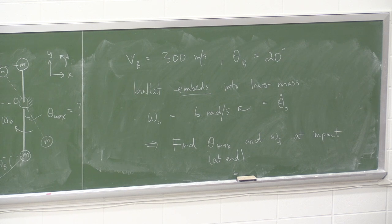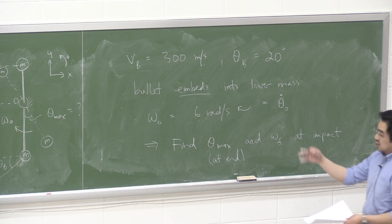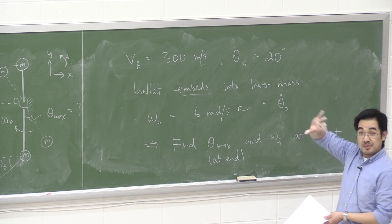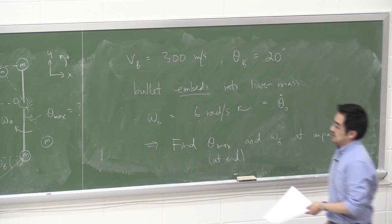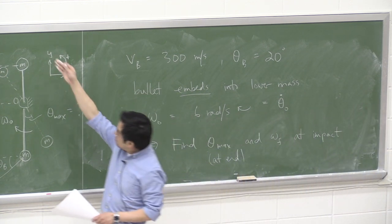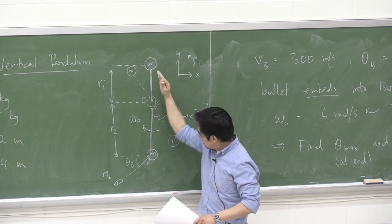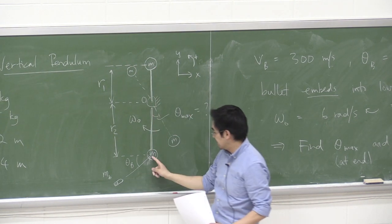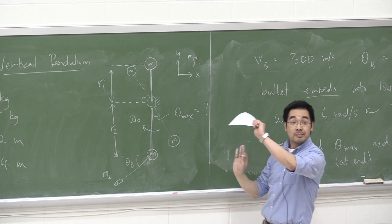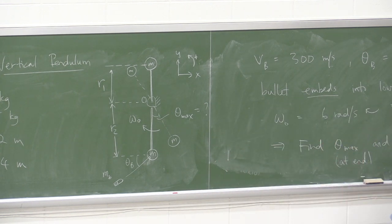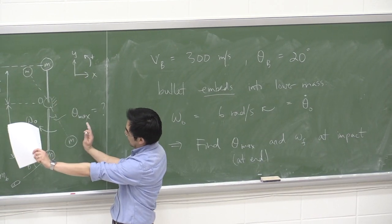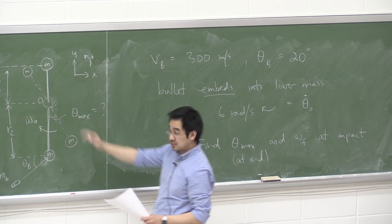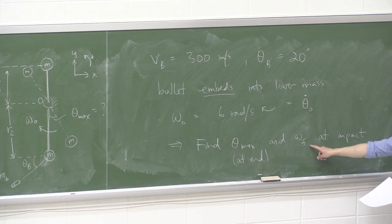To summarize: the pendulum is swinging with an initial angular velocity of 6 radians per second. Right at the moment it aligns vertically, the bullet impacts the bottom mass. The whole pendulum then swings the other way. We want to find: the final theta max when it swings back up, and the final angular velocity at impact.